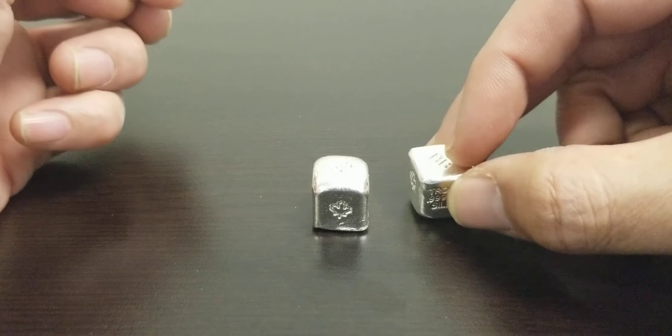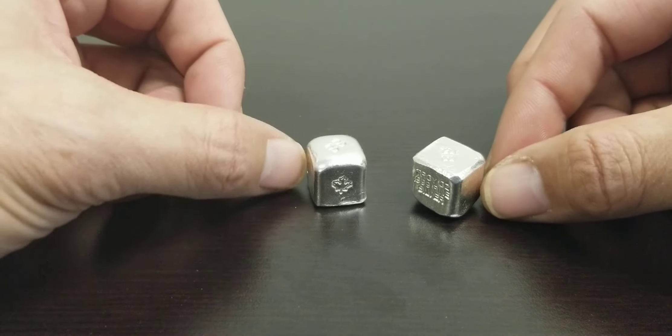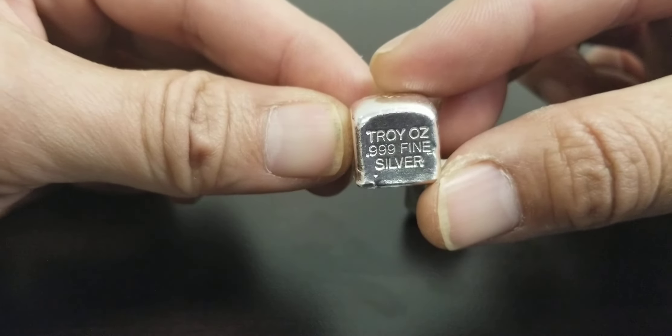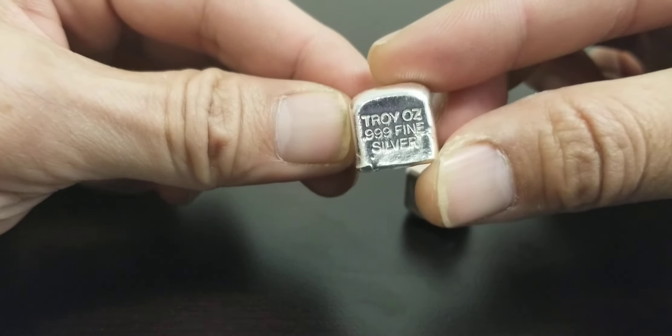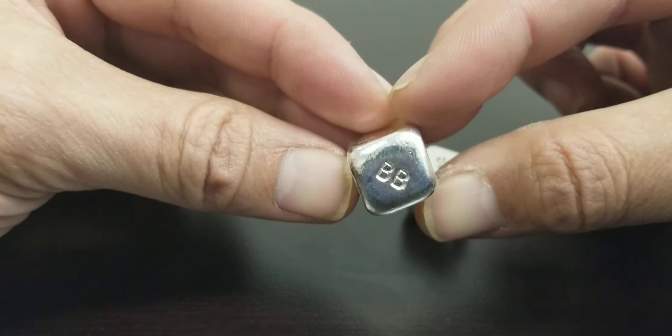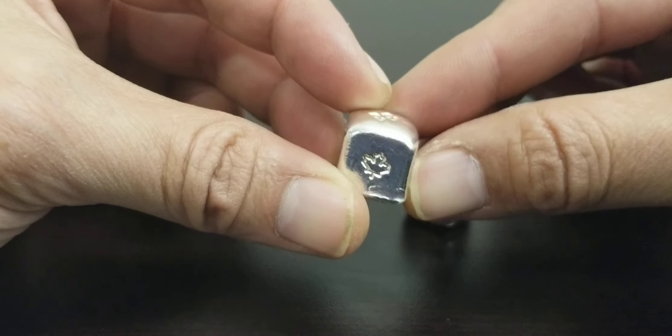One ounce poured cubes or blocks or dice, or whatever you guys want to call them. Really nice, it'll be great for my silver poured collection.